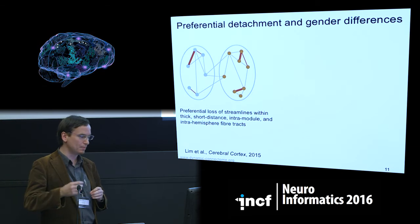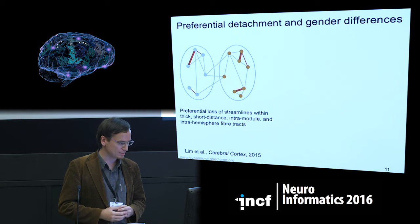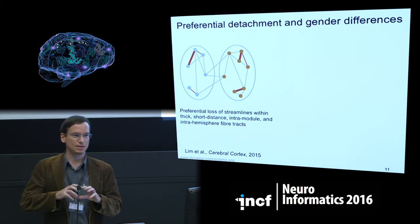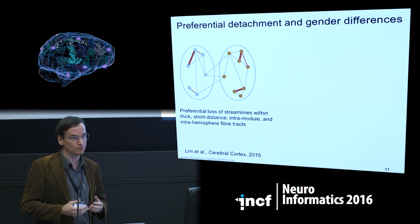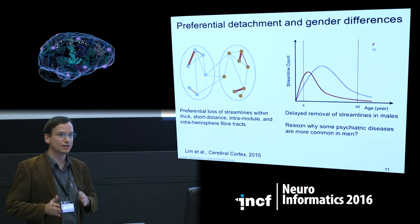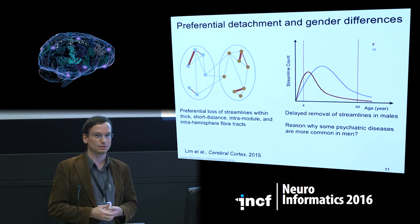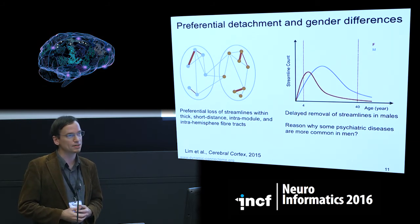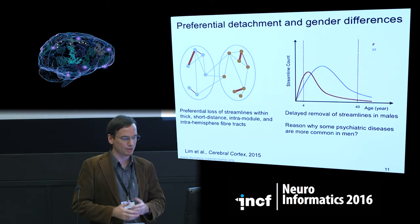Presumably the stable fiber tracts could also be part of the rich club or formal networks — something to test in the future. We also found that this reduction in streamlines occurs earlier for females than for males. The pattern is similar but the time course is earlier in females, raising the question of whether this links to psychiatric diseases that sometimes occur earlier or more frequently in one gender.